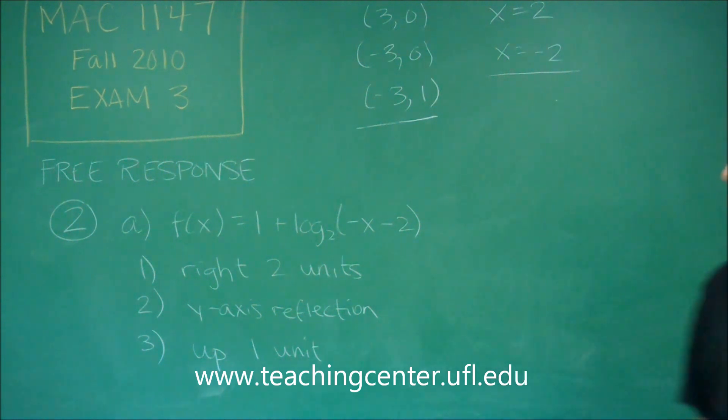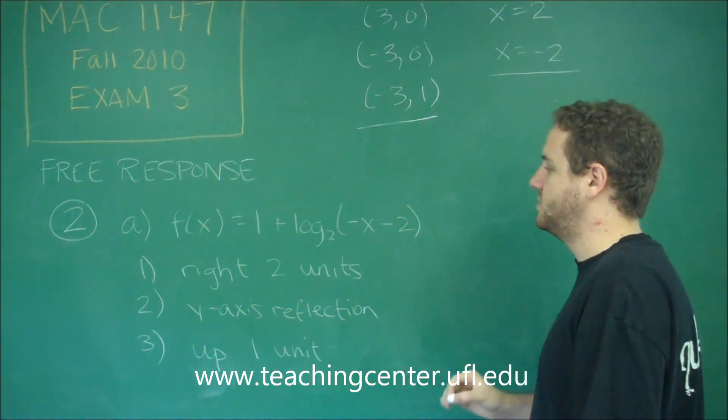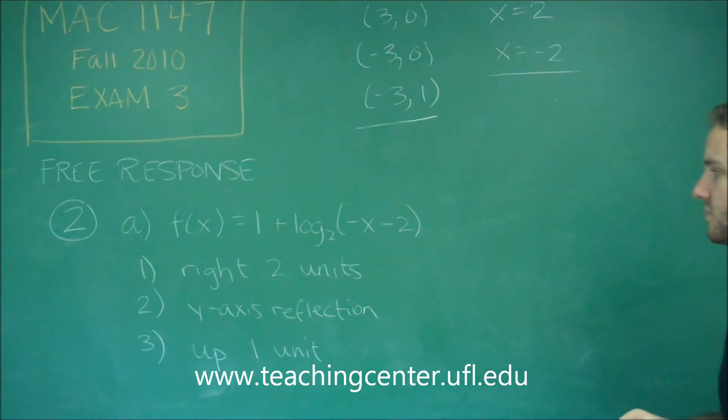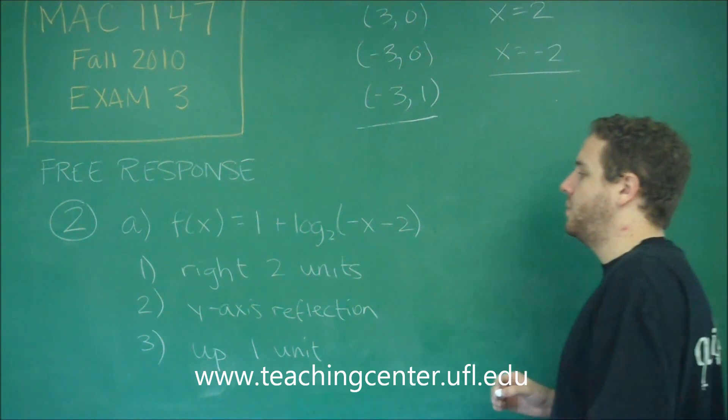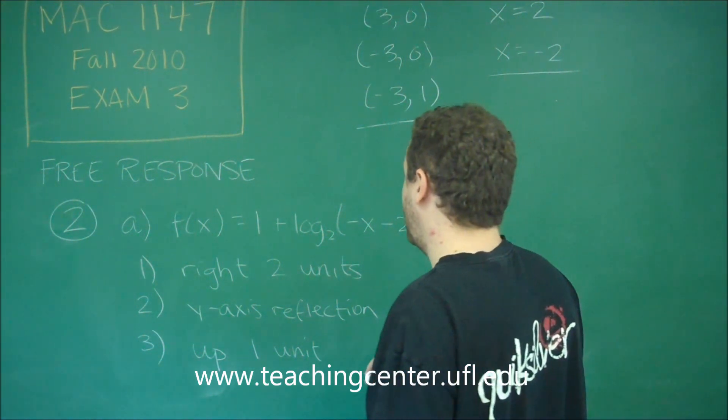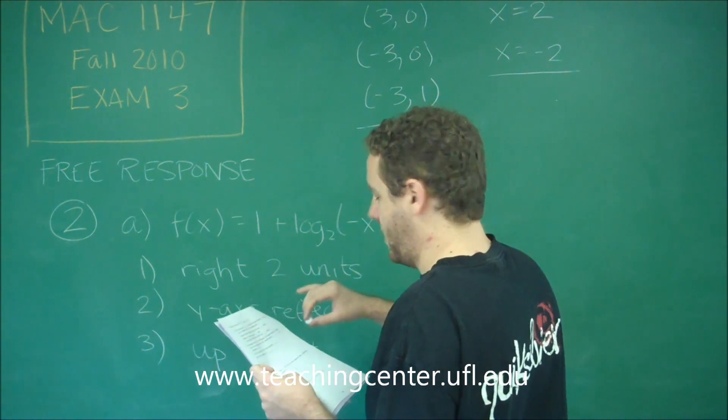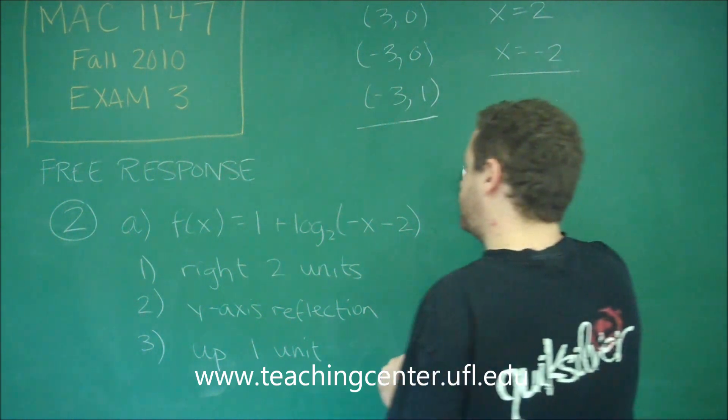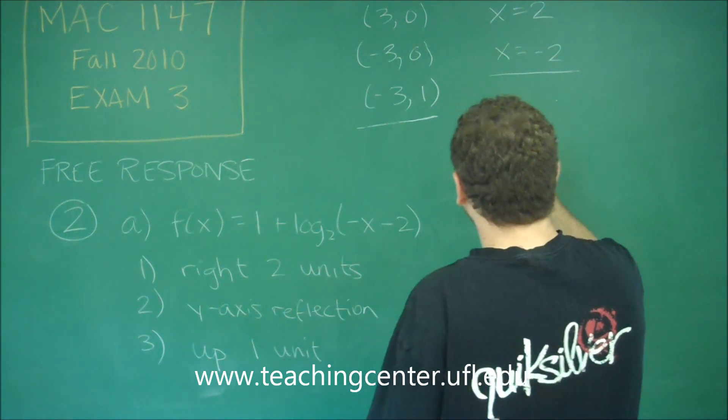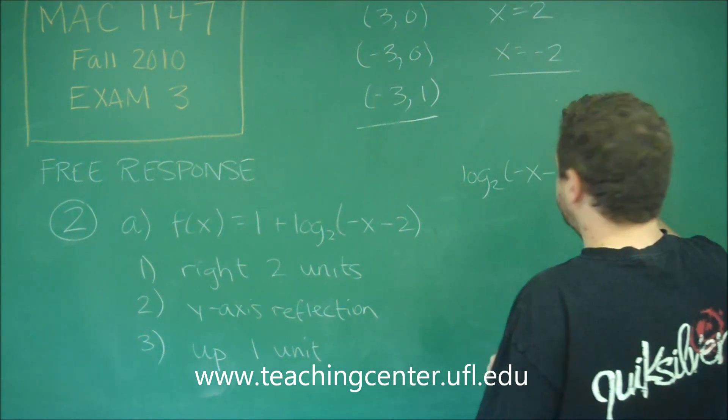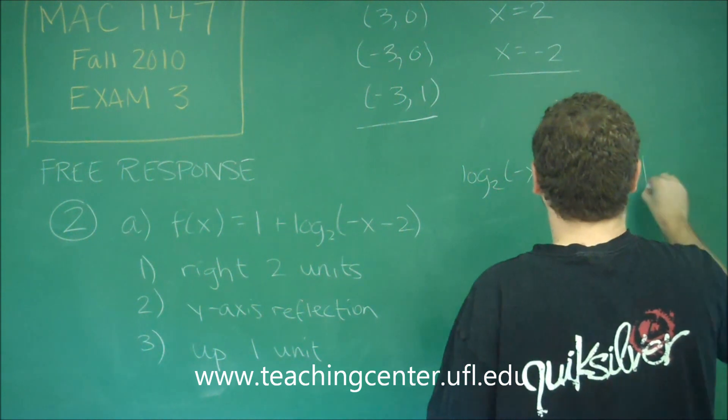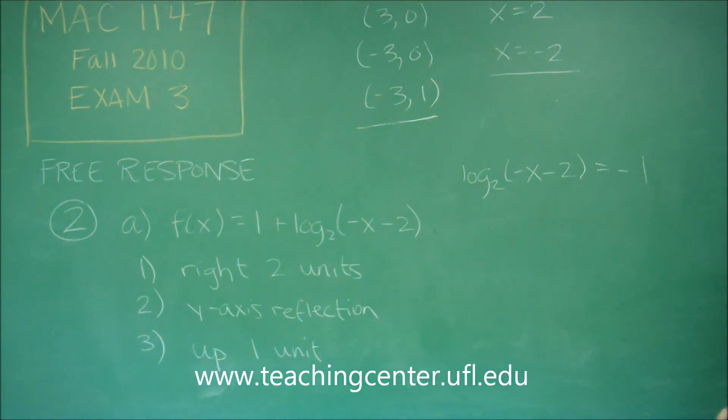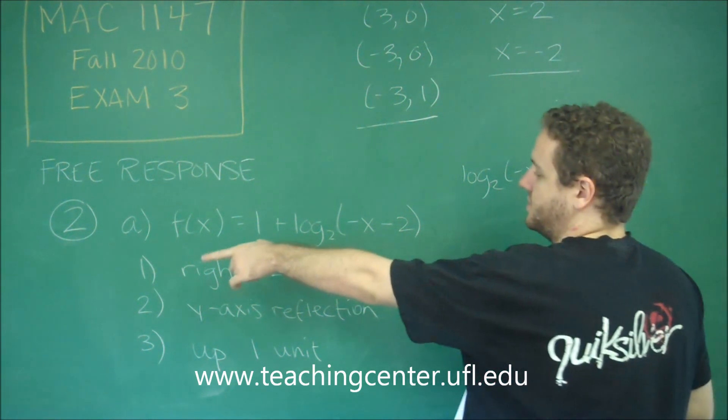So our x intercept is when our y equals 0 so you would just need to set this function equal to 0 and solve. So what we would have here for our x intercept is we need log base 2 of negative x minus 2 to equal negative 1.